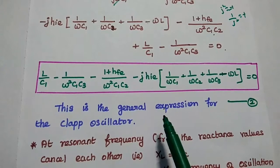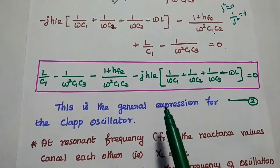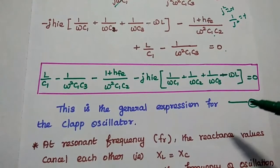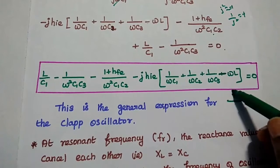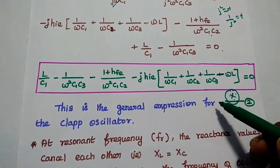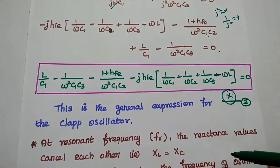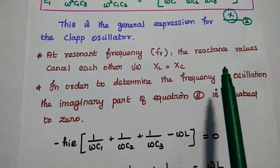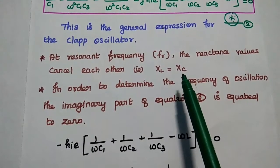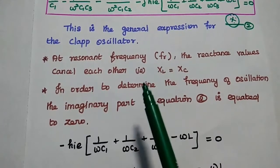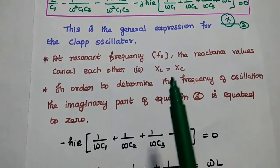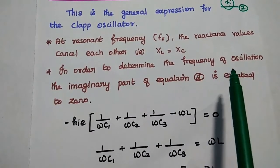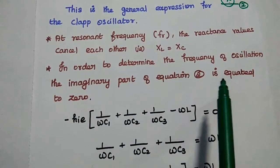The first equation is the general expression for any LC oscillator. After substituting the CLAP oscillator values, we get the general expression for this oscillator. To find the frequency of oscillation, at resonant frequency the capacitive reactance equals the inductive reactance and both cancel. So we equate the imaginary part of the equation to zero.